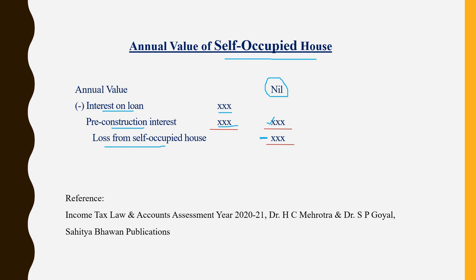This is how we calculate income for a let out property and the annual value of a self-occupied property. Hope you understood the concepts and found this video useful. Thank you for watching.